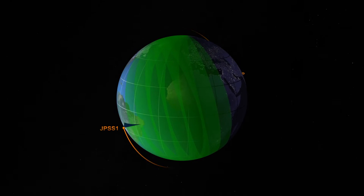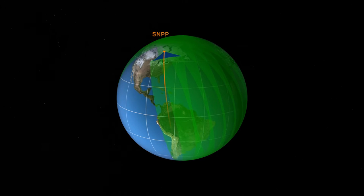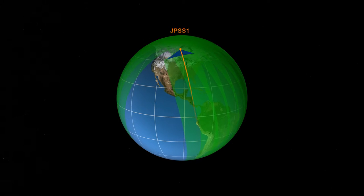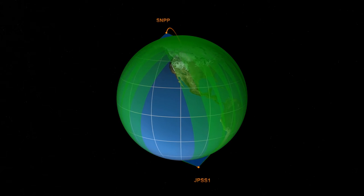If we look at the entire imager data swath, we can see how the data builds up over time, covering the entire Earth. It takes about 14 passes for each satellite in this orbit to cover the entire Earth's surface.